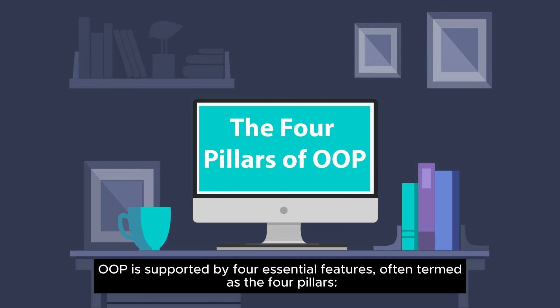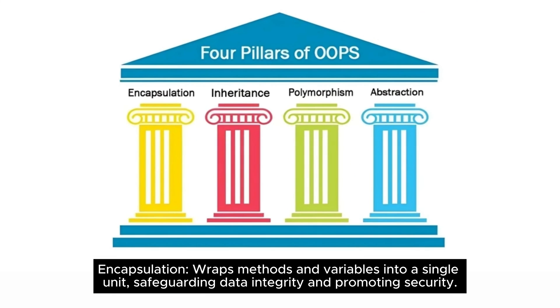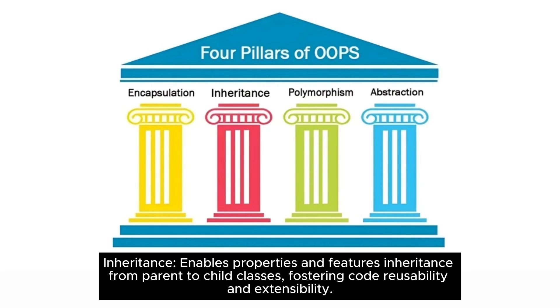The four pillars of OOP. OOP is supported by four essential features, often termed as the four pillars. Encapsulation wraps methods and variables into a single unit, safeguarding data integrity and promoting security. Inheritance enables properties and features inheritance from parent to child classes, fostering code reusability and extensibility.